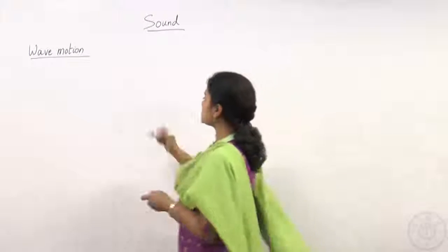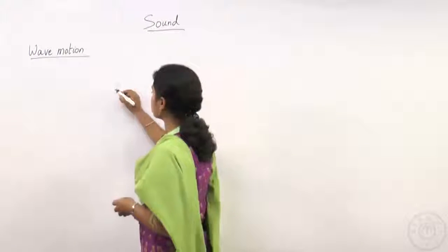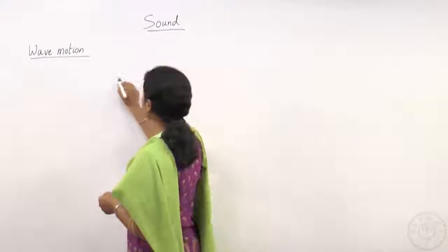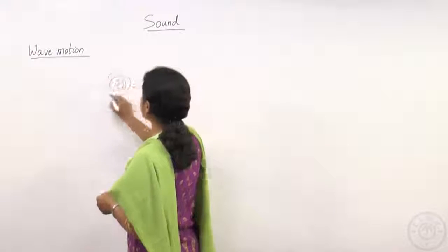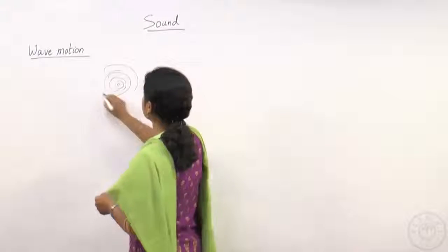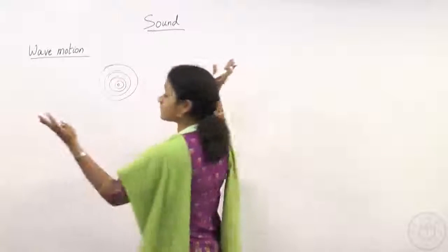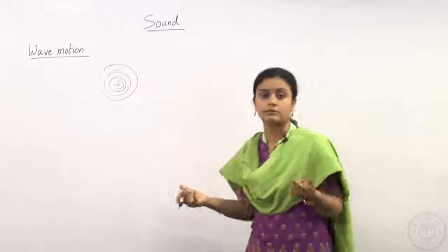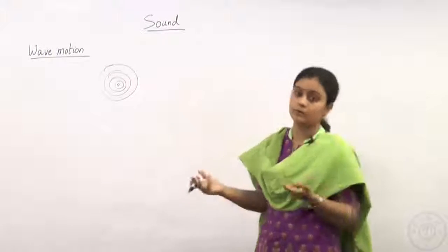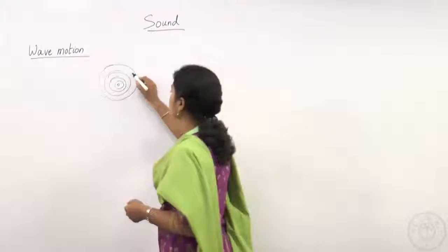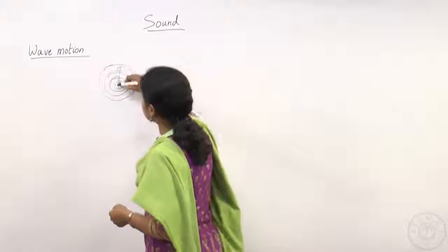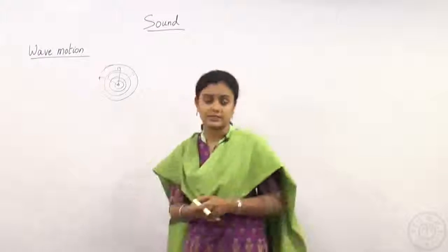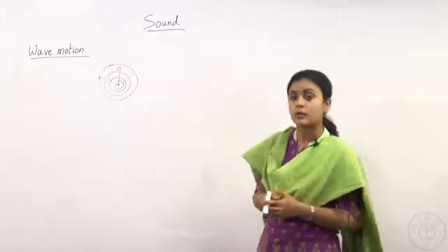If you observe, this is the source — the point where you threw the stone — and there will be ripples traveling outward toward the outer part of the system, like water in the bucket or pond. It is propagating outward. This disturbance format is called a wave.